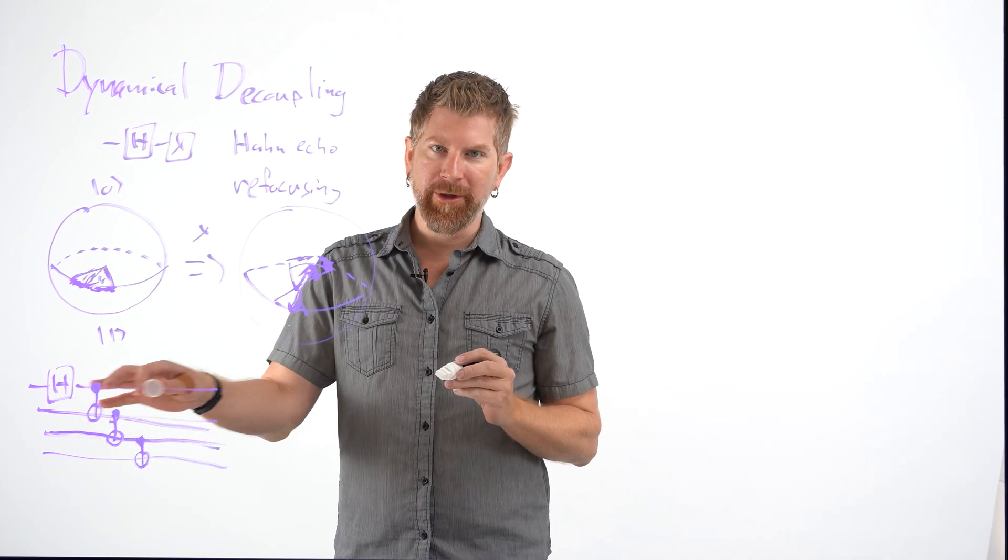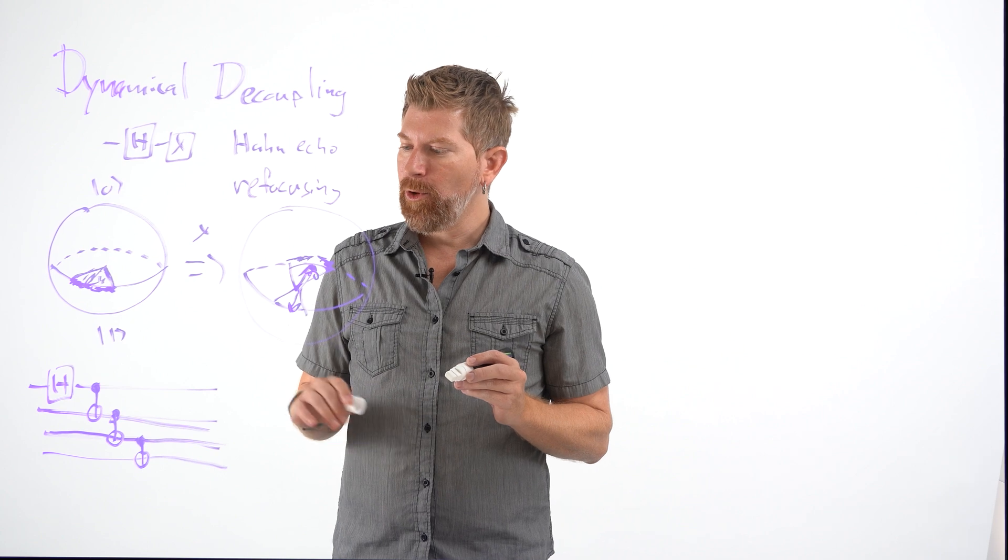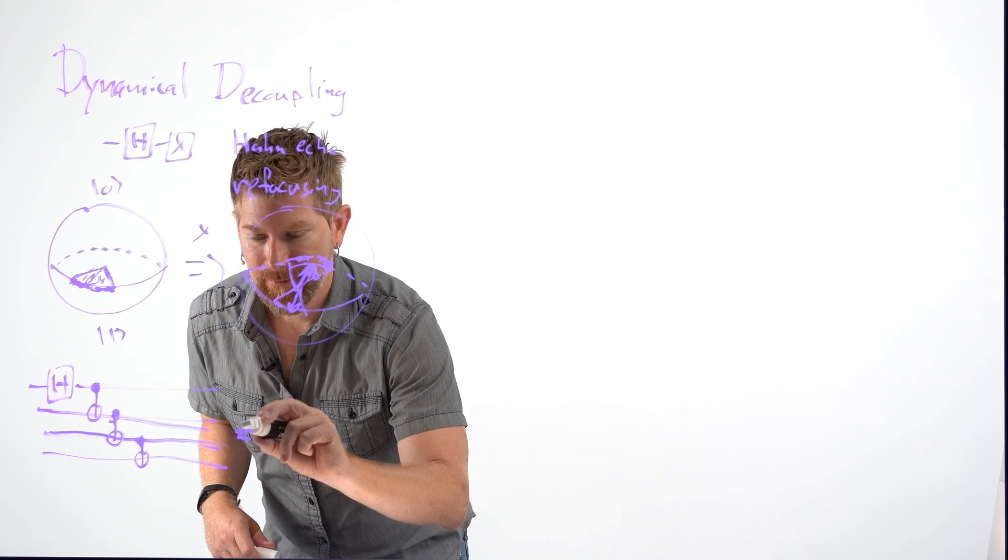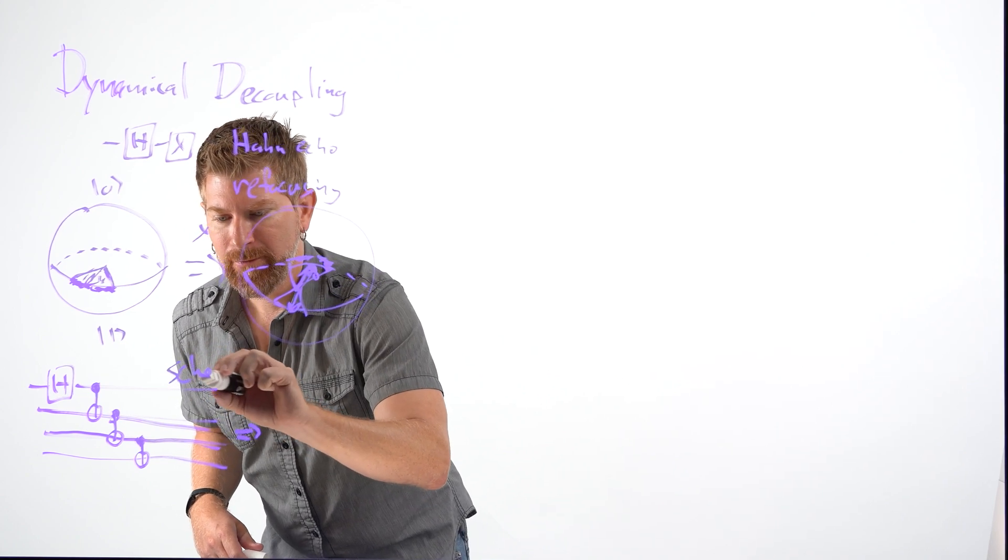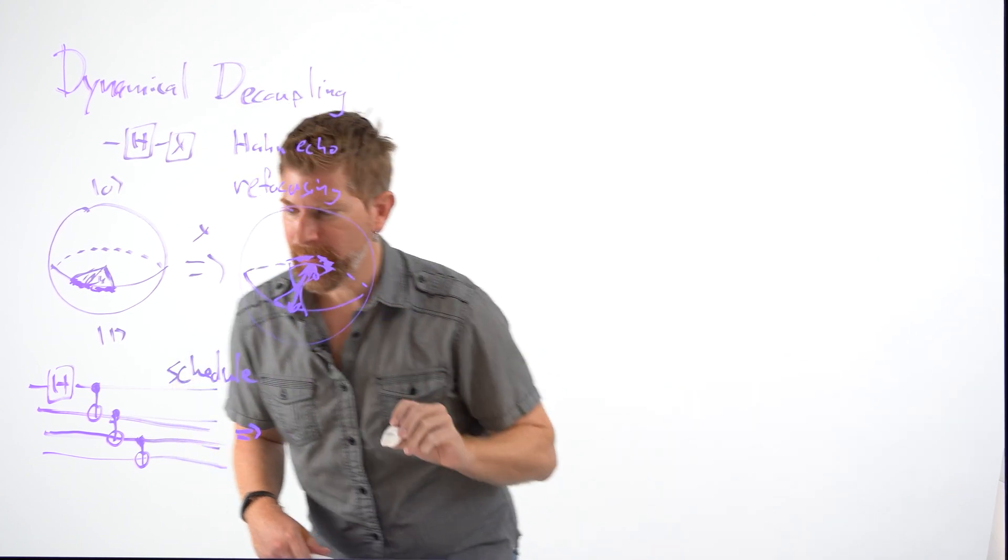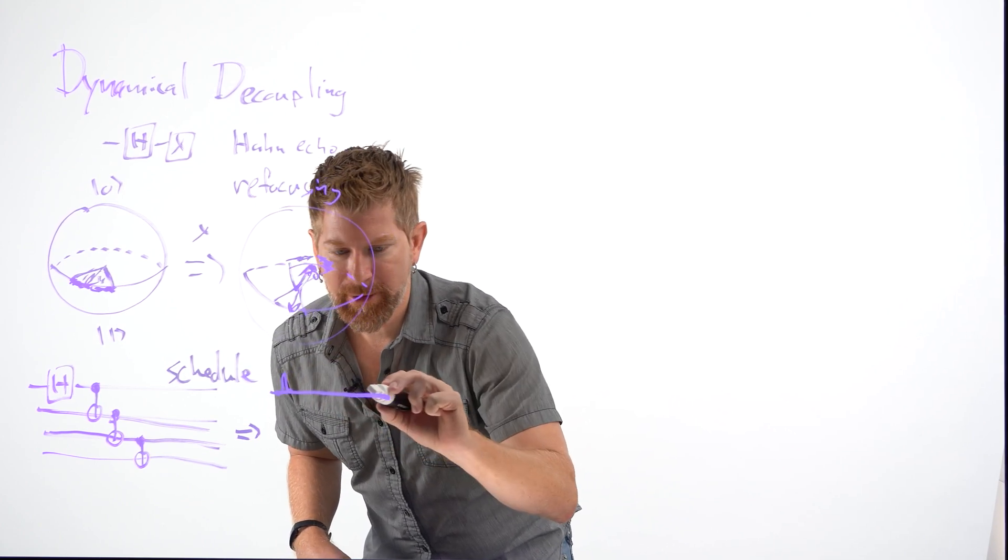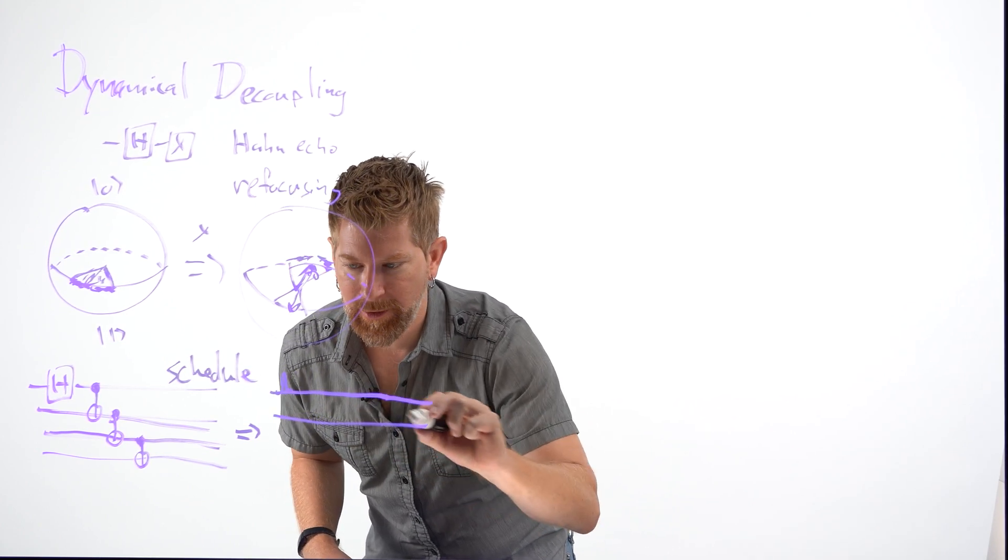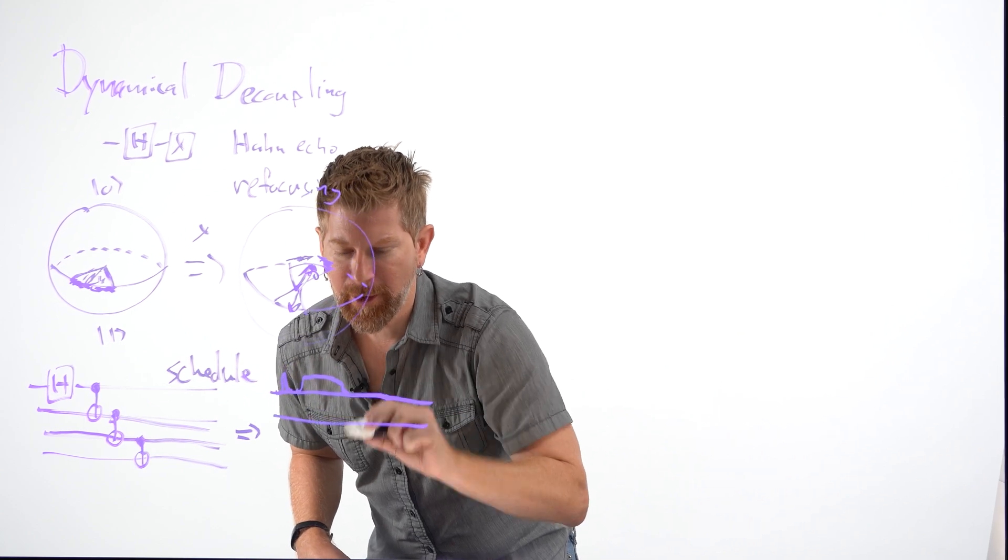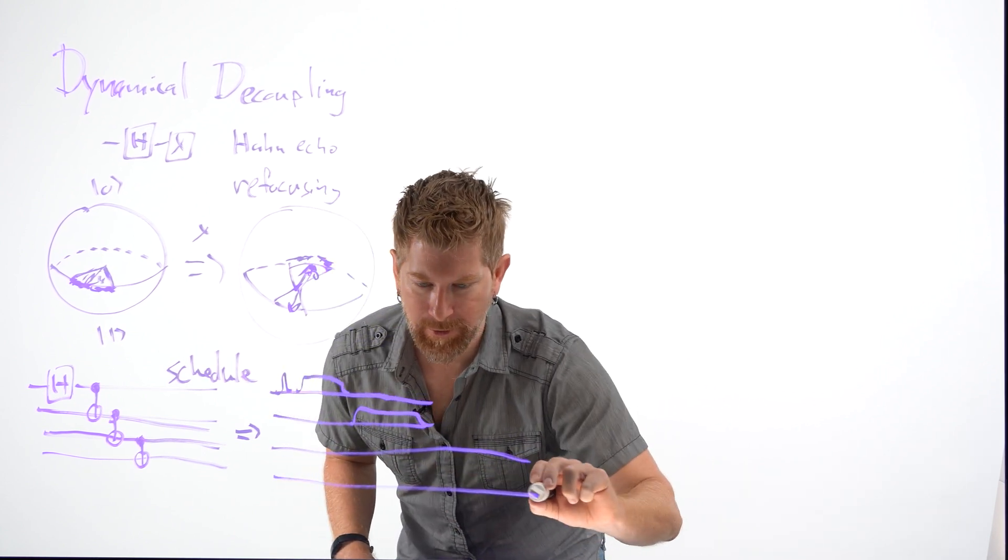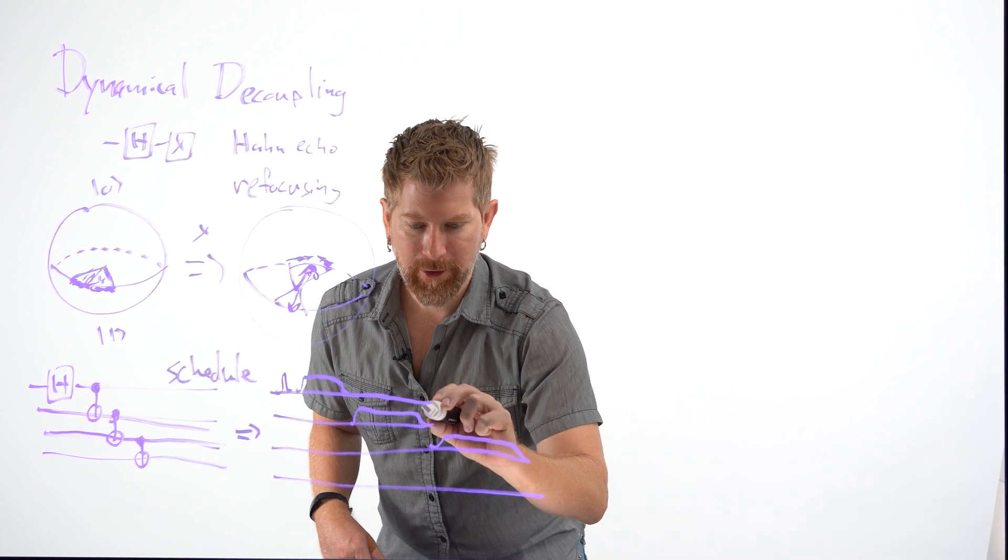Well, in order to actually implement this on a superconducting quantum computer, we need to do something called scheduling, which turns these gates into microwave pulses. So what does this look like? Well, the single qubit pulses tend to not take very much time. The two qubit pulses are in general about 10 times longer. So long that I'm running out of room here.